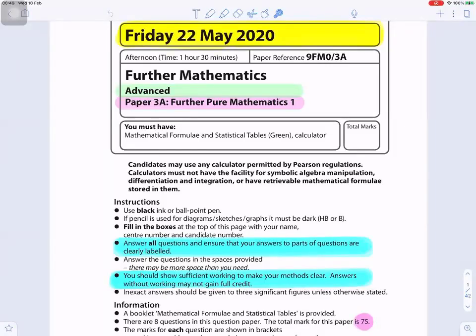Paper 3A for Further Pure Mathematics 1 Advanced, 9FM0/3A, Friday 22nd May 2020. Answer all questions and ensure that your answers to parts of questions are clearly labeled. You should show sufficient working to make your methods clear. Answers without working may not gain full credit. There are eight questions in this question paper. The total mark for this paper is 75.